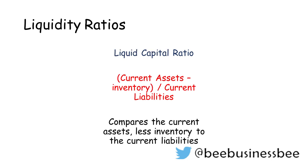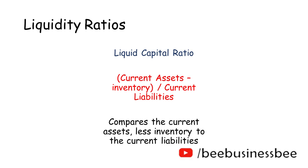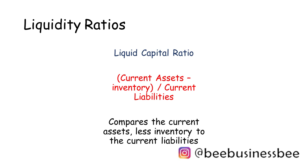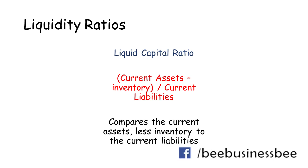The second liquidity ratio we can use is called the liquid capital ratio. Just like the current ratio, it is still calculated using your current assets and liabilities. However, we now add in the term inventory, which is a technical term for stock. So this ratio is current assets minus inventory, divided by current liabilities. This calculates how able you are to meet your current obligations without actually selling your stock.